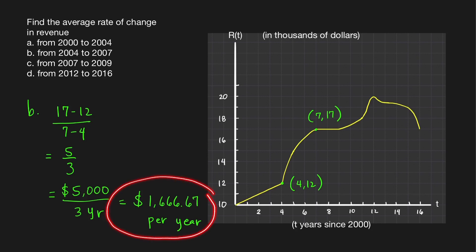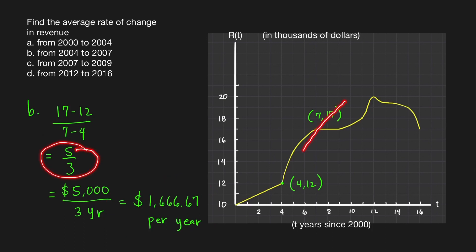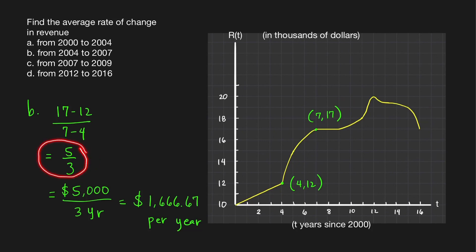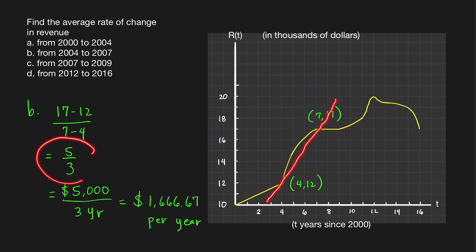From 2004 to 2007, on the average, the revenue is increasing at a rate of $1,666.67 per year. So 5/3 is just the slope of the line that passes through the two points (4, 12) and (7, 17). We can also find this using rise over run: moving from this point to this point, you rise by 5 units and run to the right by 3 units. Therefore, the slope of the line that passes through these two points is equal to 5 over 3.